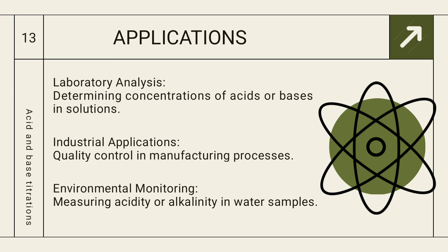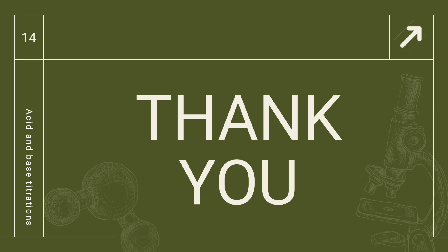The applications of acid-base titration are: first, laboratory analysis — determining the concentration of acids and bases in solutions; second, industrial application — used for quality control in manufacturing processes; third, environmental monitoring — measuring acidity or alkalinity in water samples and soil samples to detect contamination from pesticides or industrial pollution. In the pharmaceutical industry, the quality control department uses acid-base titration to ensure product standards.